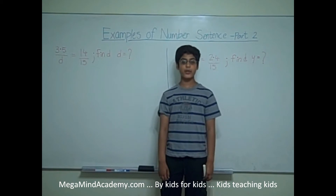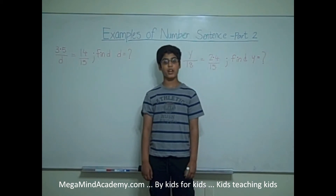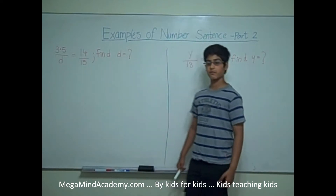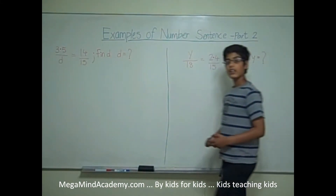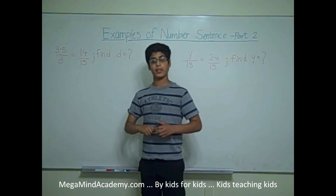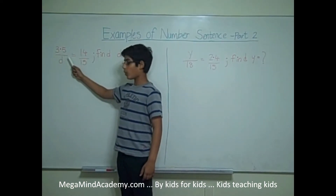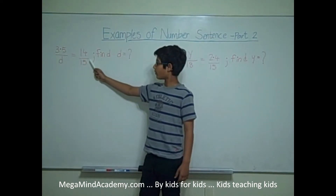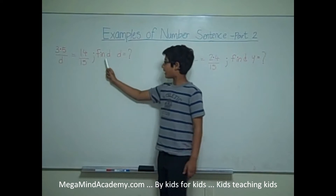Hi! Today we're going to learn about Examples of Numbering Sentences, Part 2. Let's say we have a problem, like 3.5 over d is equal to 14 over 15. Find d.